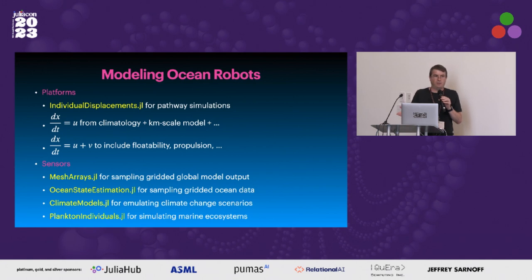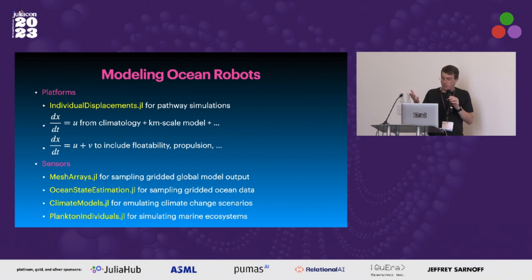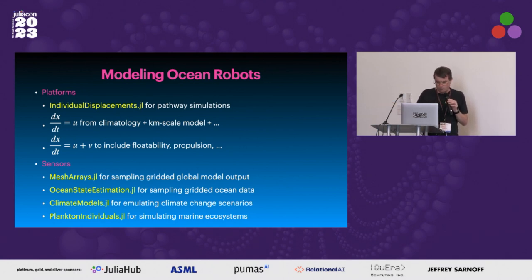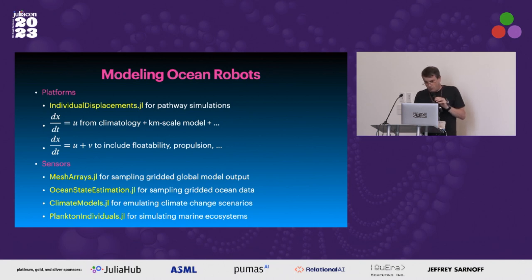The next part is the sensor — what are the robots observing and sampling? For this I use a series of packages: MeshArrays, which I presented at JuliaCon 2018, handles gridded model output. OceanStateEstimation gives gridded variables from Earth Observation. ClimateModelJL is what I use to run climate scenarios. And ultimately we also consider models of the marine ecosystem, because a key thing we track is how much we are disrupting marine life through warming.